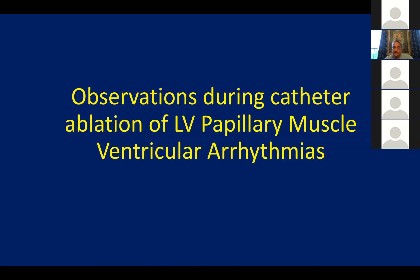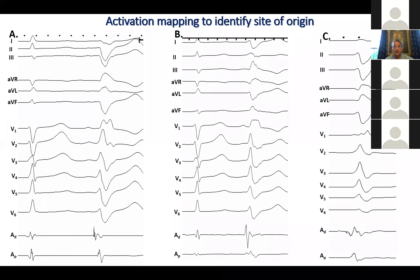During the procedure itself, what are some of the observations? When you're trying to go after these areas, activation mapping is the preferred tool. Using electro-anatomic mapping together with ICE guidance, you really have the ability to sample different aspects of the catheter analysis. Here are three examples.